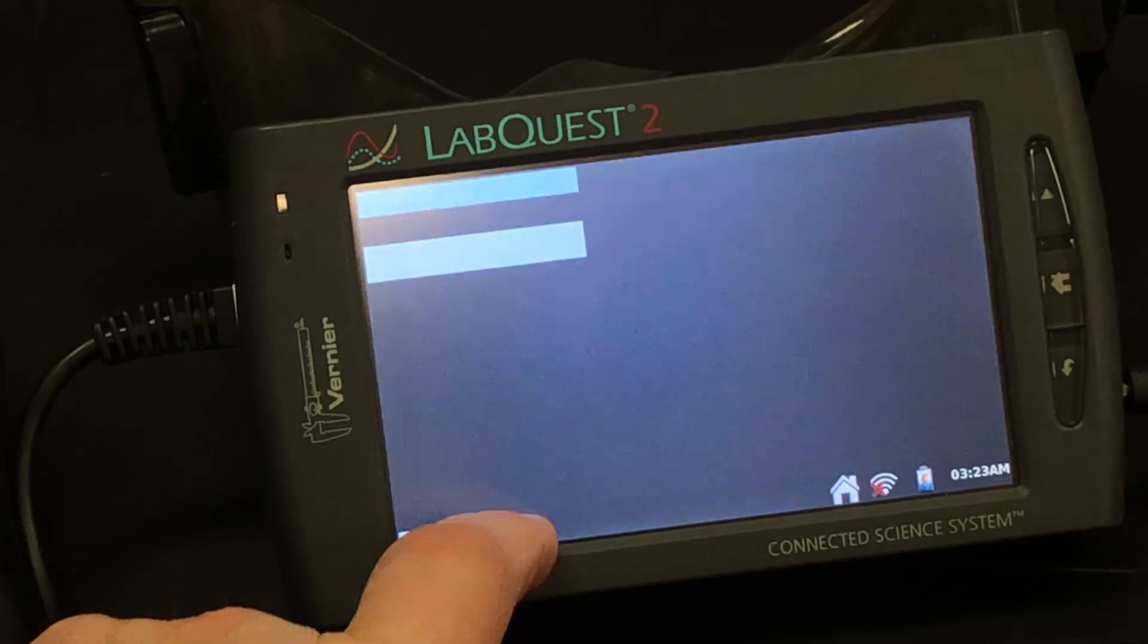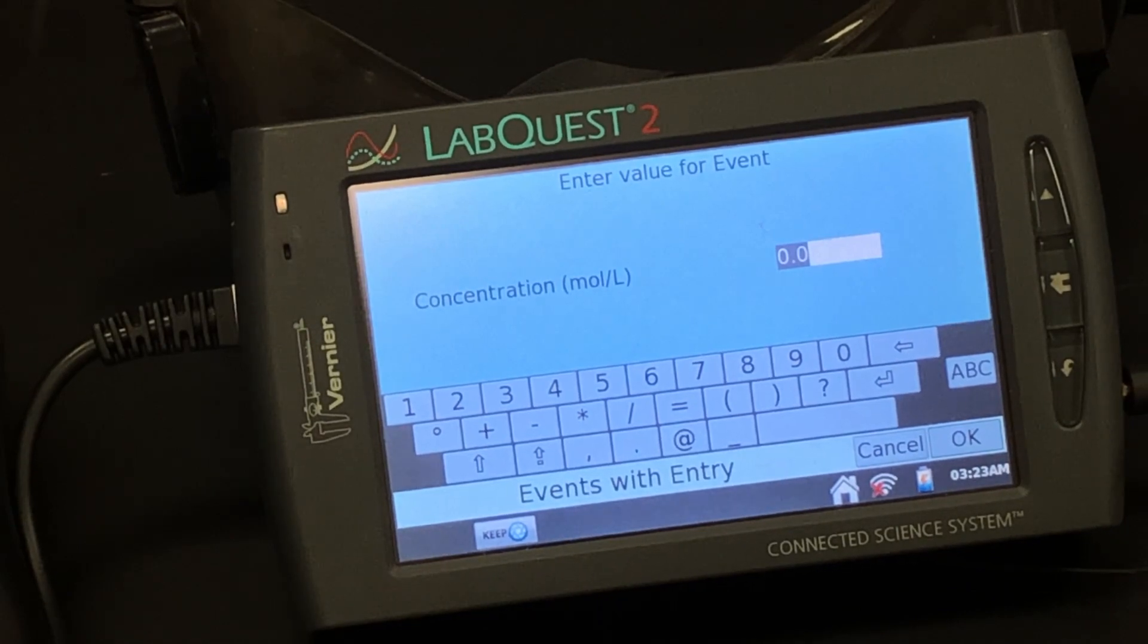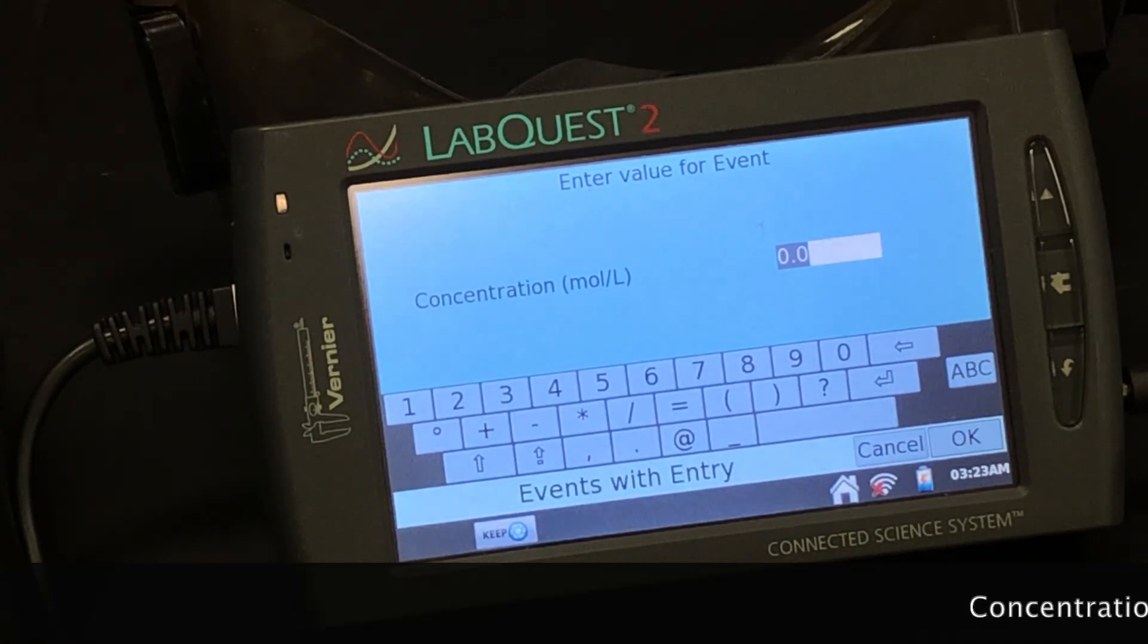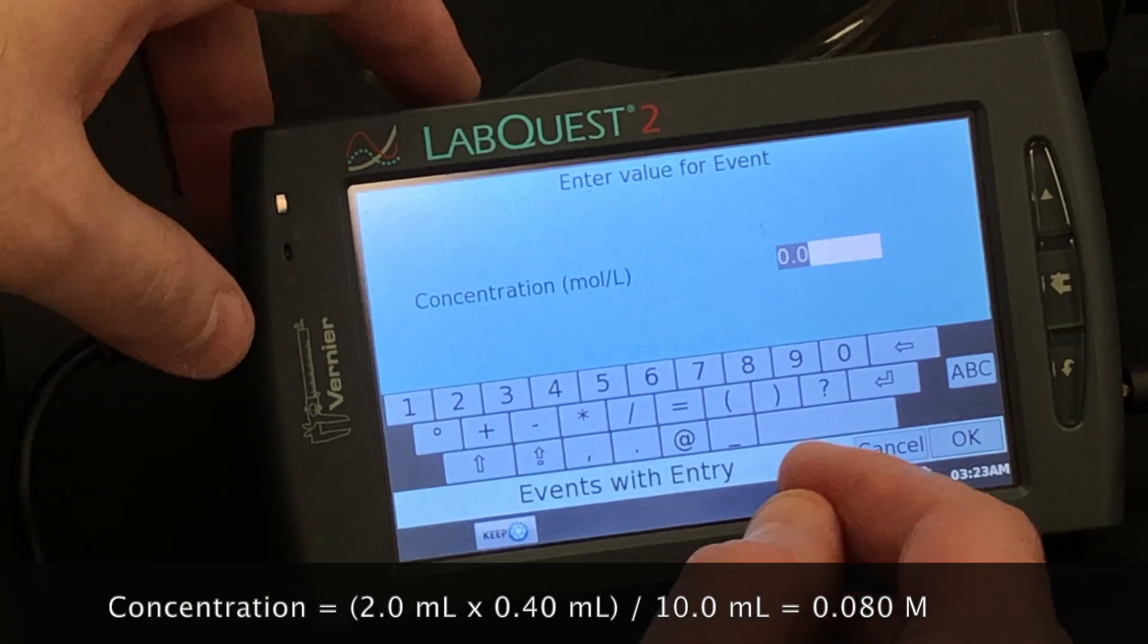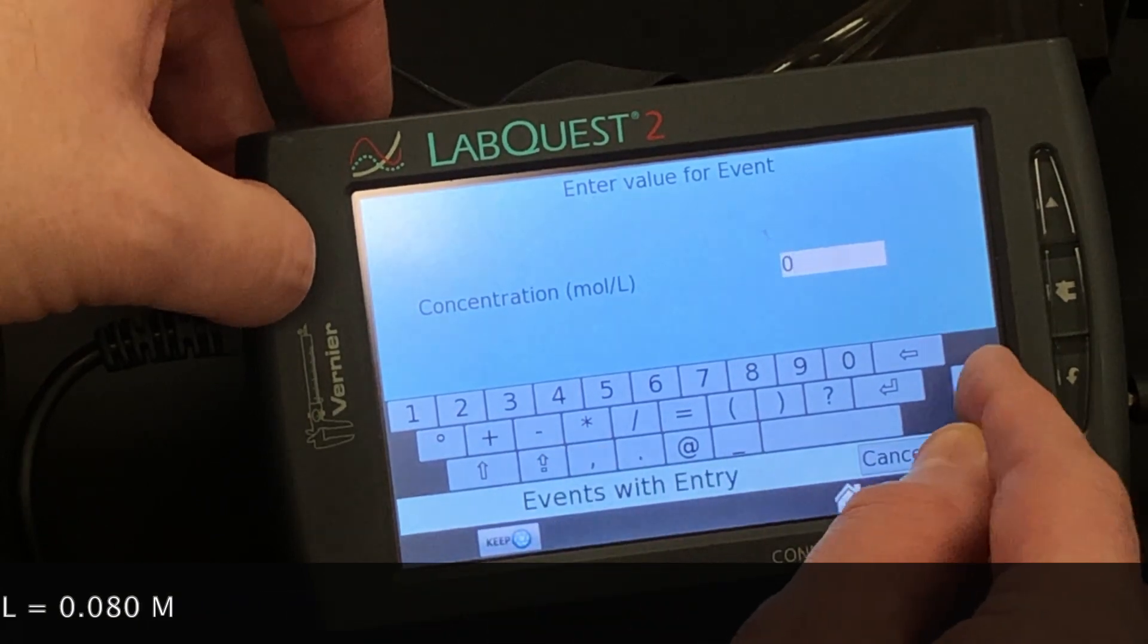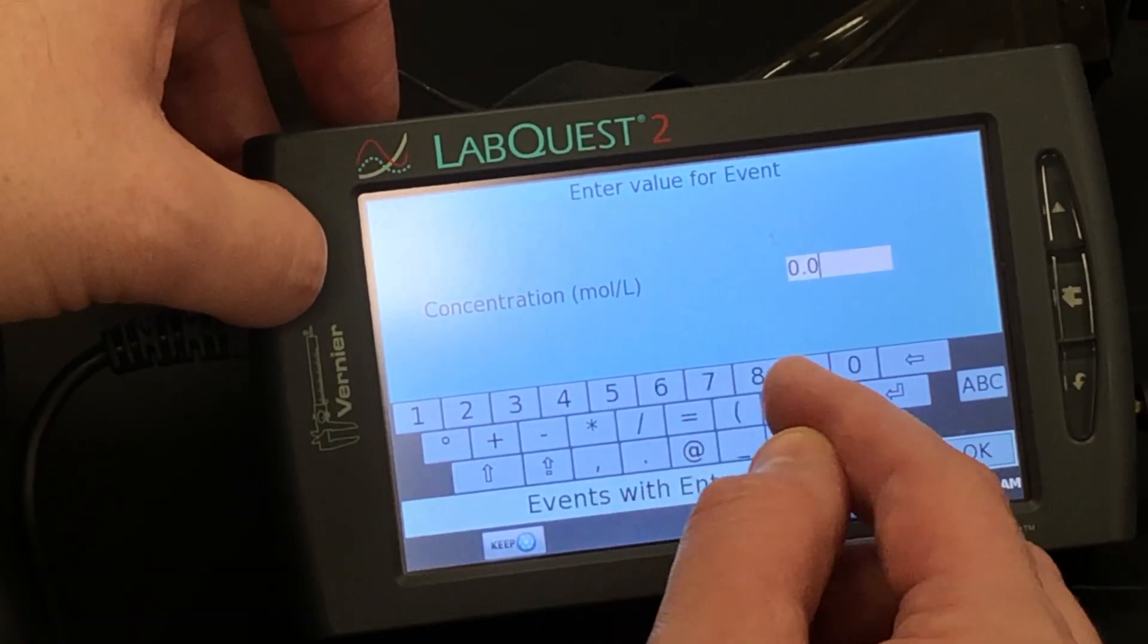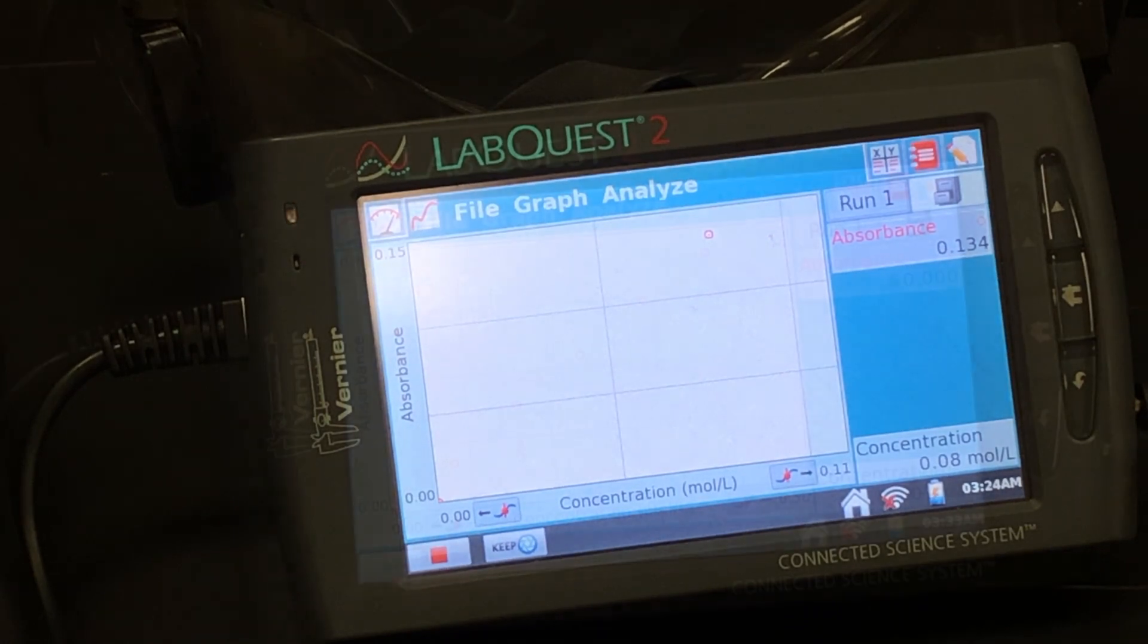Then once you do that, you hit keep, and it asks you, what is the concentration of this? In the solution that we had, it was 2 milliliters of copper sulfate. That's basically a 20% solution, or 0.2. We know that the starting concentration of the copper sulfate was 0.4, so it's 0.4 times 0.2, which is 0.08. So then you type in, using the touchscreen here, 0.08, and the concentration is in moles per liter. And you hit OK. And now you can see here there's a data point. So when we do that again and again, you'll see more points, and you'll see the shape of the curve unfold.